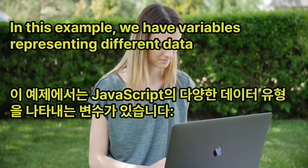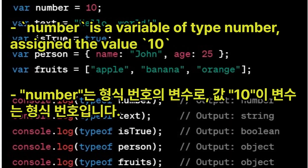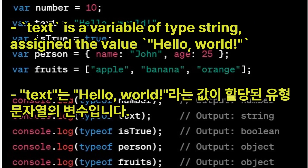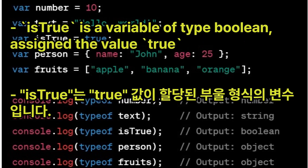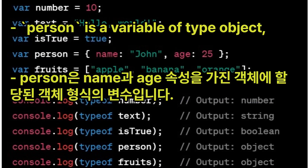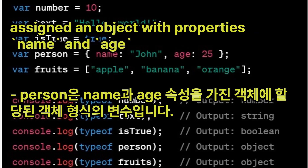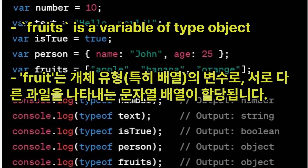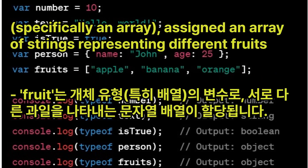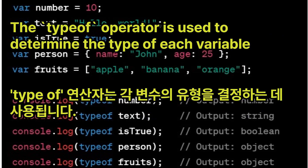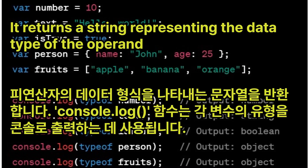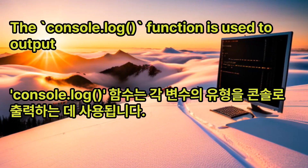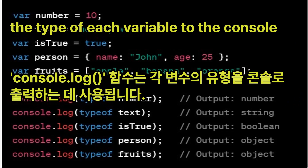In this example, we have variables representing different data types in JavaScript. 'number' is a variable of type number assigned the value 10. 'text' is a variable of type string assigned the value 'Hello, world'. 'isTrue' is a variable of type boolean assigned the value true. 'person' is a variable of type object assigned an object with properties name and age. 'fruits' is a variable of type object, specifically an array, assigned an array of strings representing different fruits. The typeof operator is used to determine the type of each variable and returns a string representing the data type.